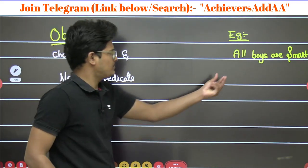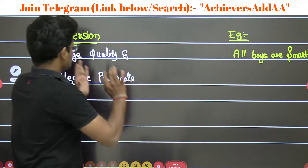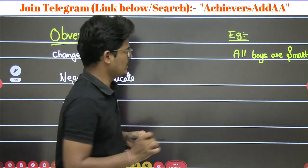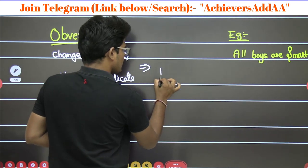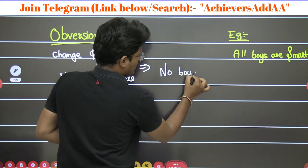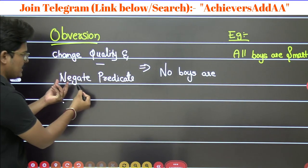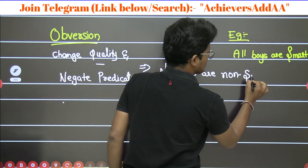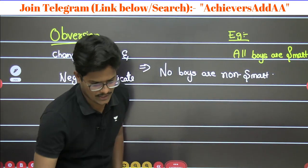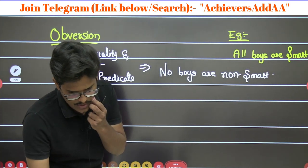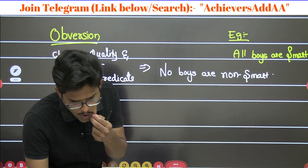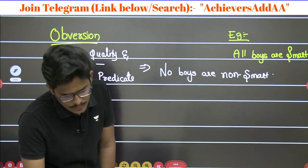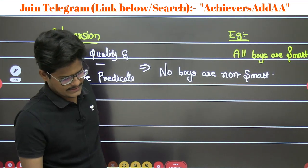So here, 'boys' is the subject and 'smart' is the predicate. I should first change the quality — quality means the positive will become negative and negative will become positive. So here, 'all' will become 'no'. I should then convert the predicate into a negative form. So the answer is: No boys are non-smart. This is simple obversion.